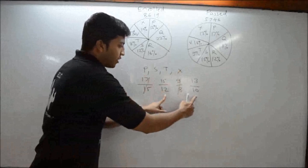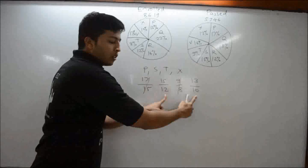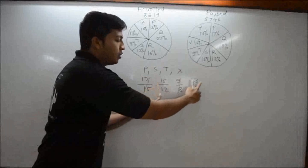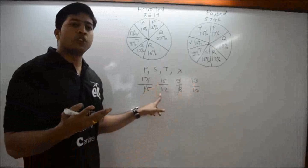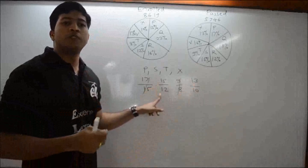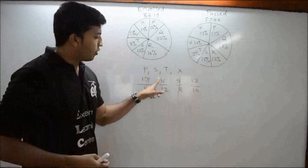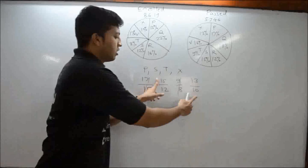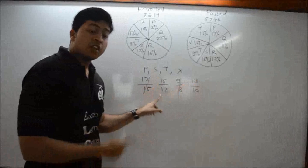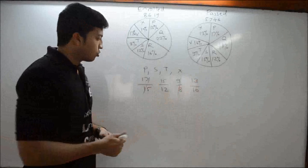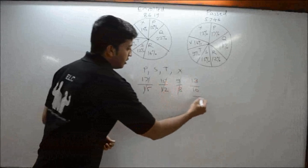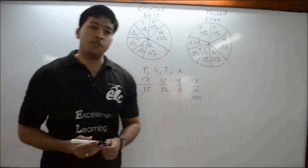Now compare the remaining two fractions: 15/12 and 13/10. First product: 15 × 10 = 150. Second product: 12 × 13 = 156 (since 12 squared is 144, add 12 to get 156). The second product is greater, so 13/10 is greater. Eliminate 15/12. The fraction 13/10 has the greatest value, meaning institute X.